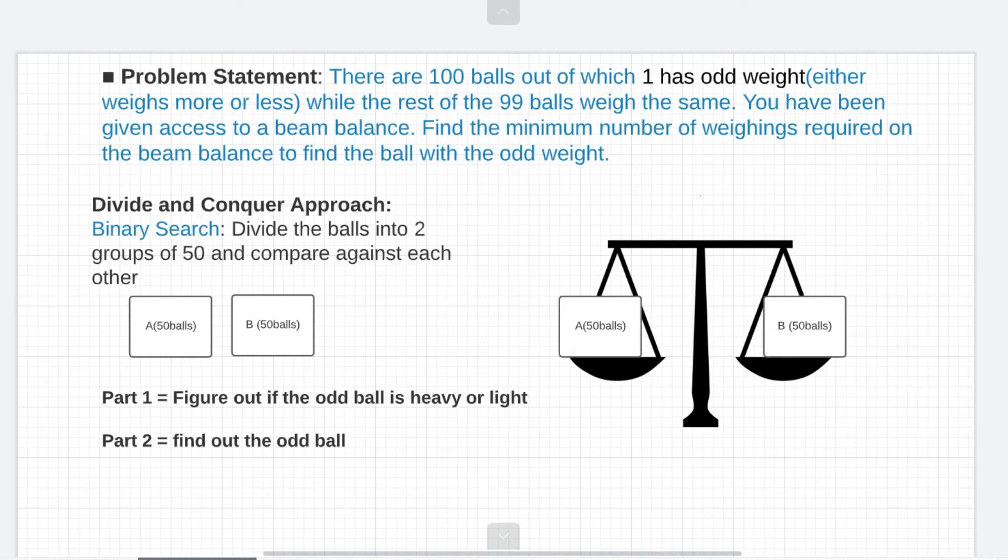So from now on we can divide a problem into two parts. The first part is to figure out if the odd ball is heavy or light. Now this part is important because otherwise we won't be able to tell during our comparisons which side has the odd ball. Once we figure out if the odd ball is heavy or light our problem will become very easy and we will be able to solve it using binary search. So let's go ahead and see how we can figure out the first part.